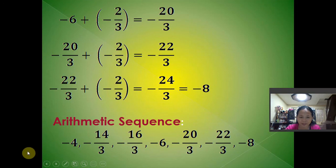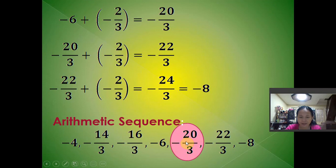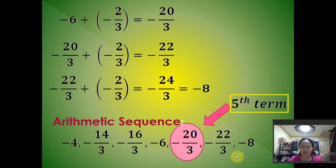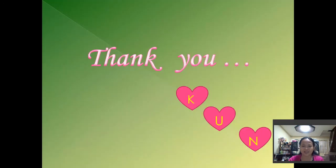For the fifth term, we simply count: the fifth term is −20/3. These five terms between −4 and −8 are our arithmetic means. Hope you learned something from this. Thank you. This is Teacher Con.